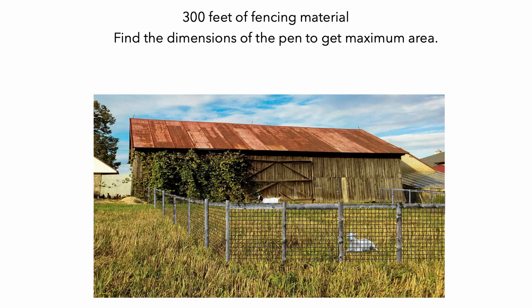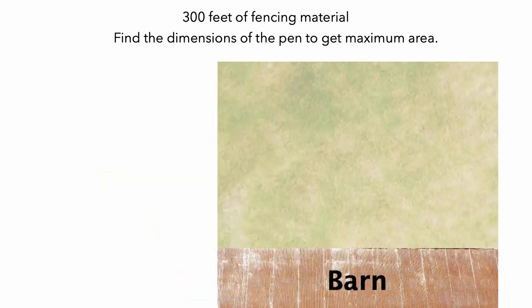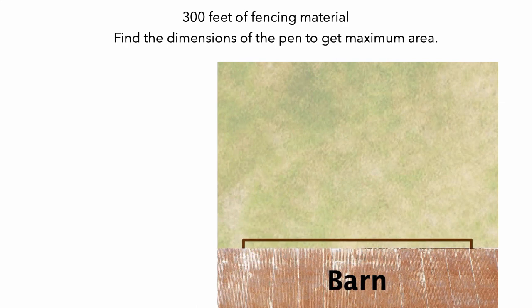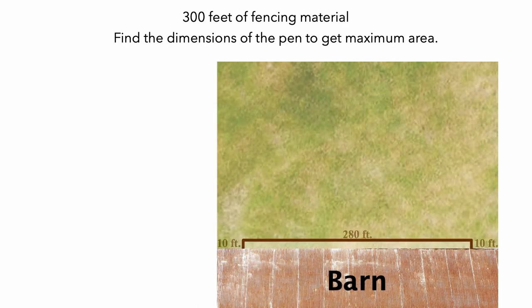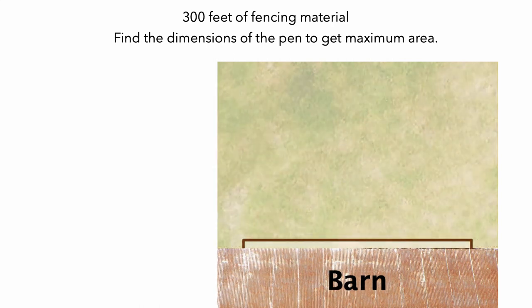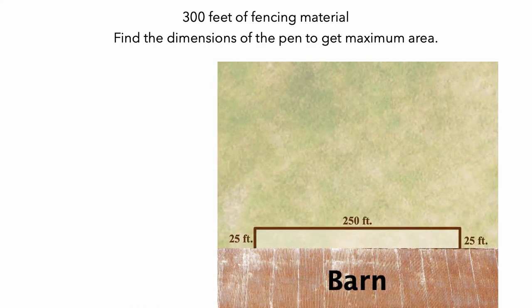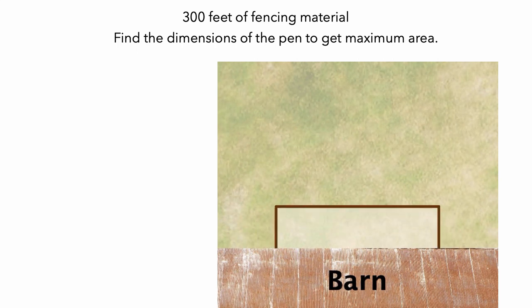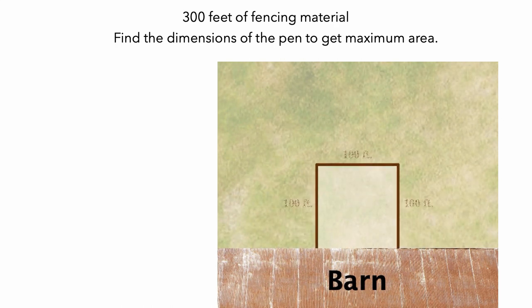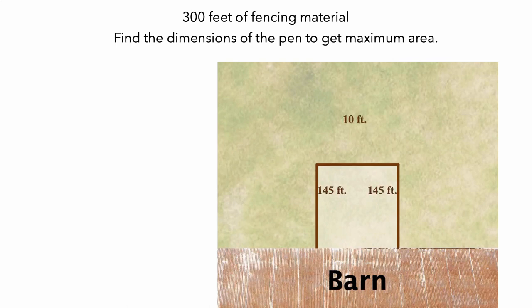Let's take a look at this situation from above and build an example of a pen. In this drawing, the pen has dimensions of 280 feet by 10 feet. However, there are lots of other dimensions that use 300 feet of fencing material. For example, it might have dimensions of 250 feet by 25 feet, or 200 feet by 50 feet, or 100 feet by 100 feet, or it might be really tall and narrow with dimensions of 10 feet by 145 feet.